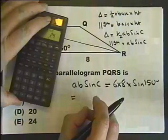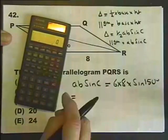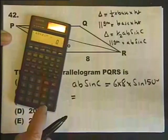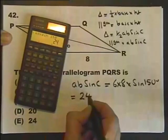Using the calculator, we need to make sure it's in degree mode, which it is. So it's 6 times 8 multiplied by the sine of 150 degrees. Which gives me the answer, 24.